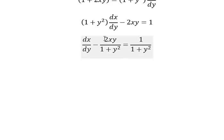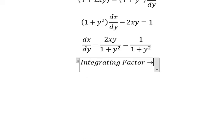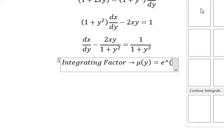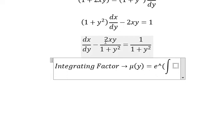So we have x and first derivative of x. We can use the integrating factor, so we need to find mu of y. And that's about e to the power of the integral, that's about negative two y over one plus y square.